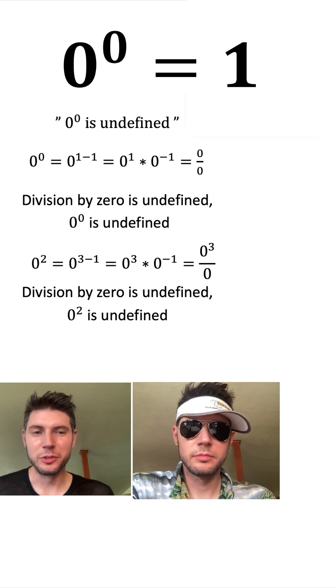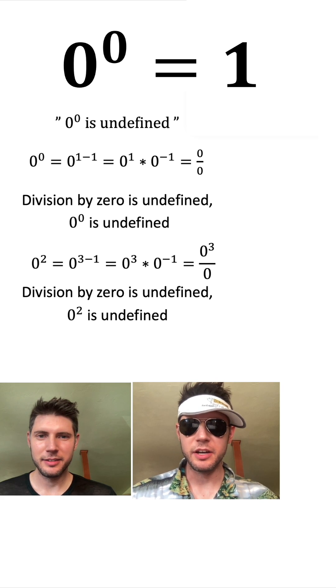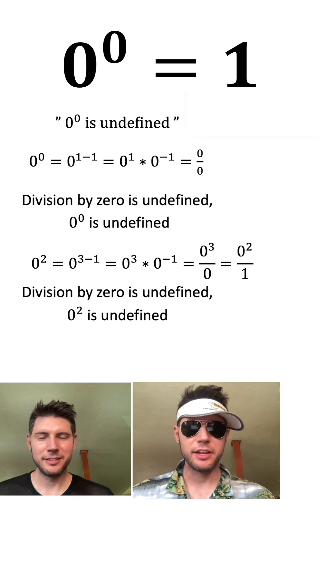So does that mean 0^2 is undefined? That's a really clever argument, but that is not correct because these zeros would cancel, and this would give you 0^2 over 1 because you could cancel one zero from